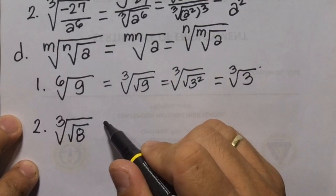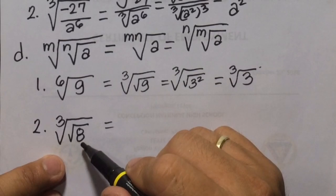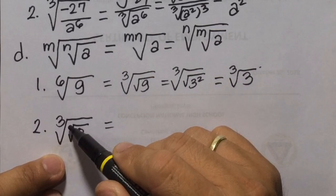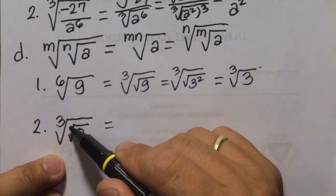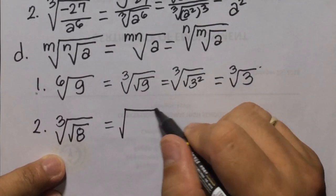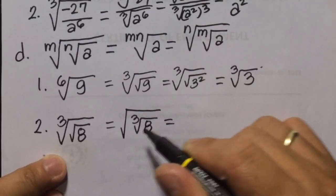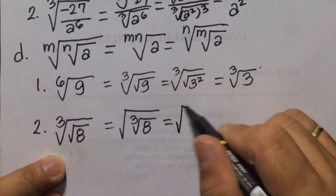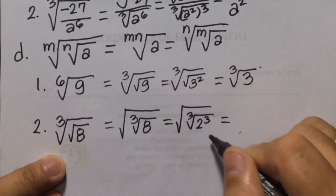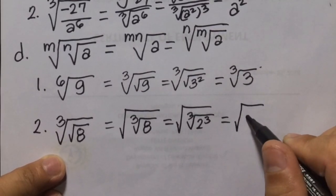Number 2: cube root of the square root of 8. Since 8 is a perfect cube, we interchange index 2 and index 3, putting index 2 outside and index 3 inside. This becomes square root of the cube root of 8. Cube root of 8 is cube root of 2 cubed, which equals 2. So the answer is square root of 2.